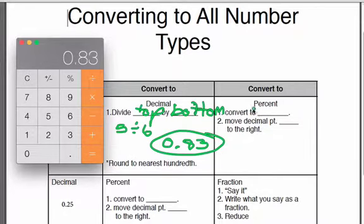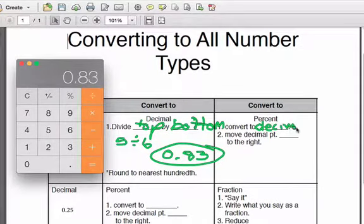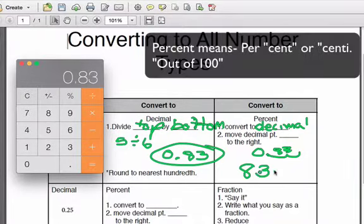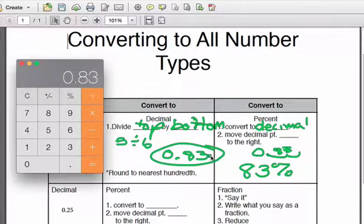How do I convert that now to a percent? We need to convert it to a decimal, which we just did. Then all we do is move our decimal point two places to the right. I have 83 hundredths. I'm going to move it two places to the right and put my percentage sign up. So 83 hundredths is actually 83 percent. In fact, the word percent means out of 100. This means 83 out of 100.